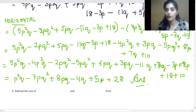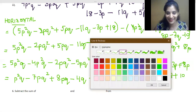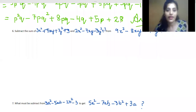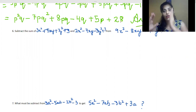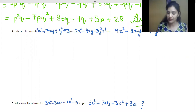Now all four of you do this question using the column method. The next question is question number six: you have to subtract the sum of two given expressions. First calculate the sum, then subtract the result from another expression. You can use either the horizontal or column method. Let's follow the column method.